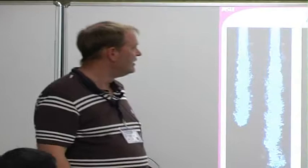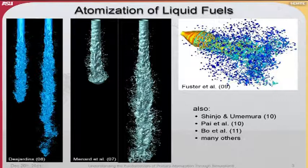People have tried to do simulations of primary atomization in recent years. Examples include work by Olivier Desjardins, Menard, Berlamont, Fuster, Chinju, and Umemura for different configurations. Madhu Pai has done some work for jetting crossflows. Beau et al., who are from Glims Group, have contributed as well, and probably many others that I apologize for not quoting here.